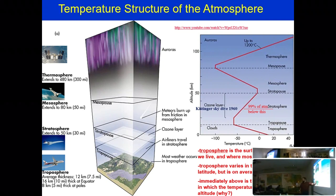The troposphere is the bottommost layer of the atmosphere. Above it are the stratosphere, mesosphere, and thermosphere, but you don't need to worry about those.